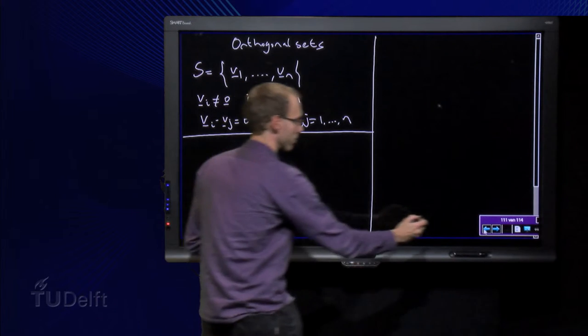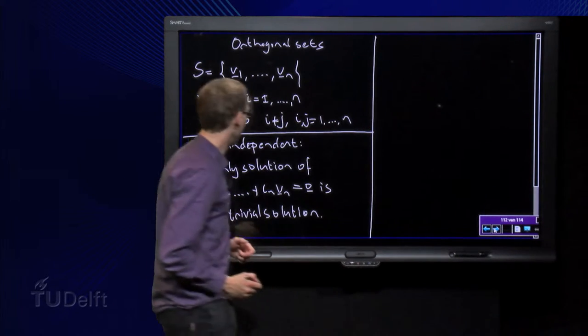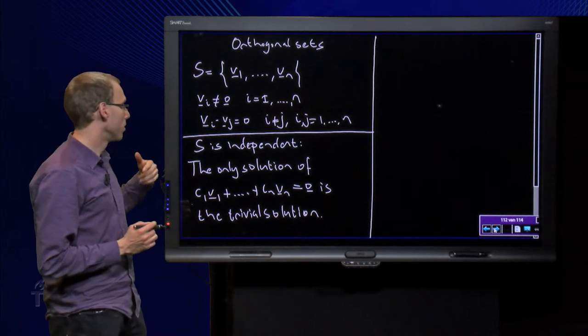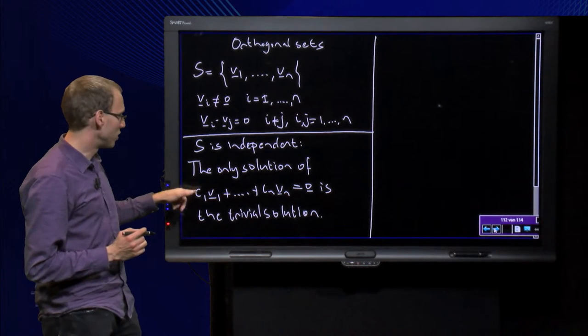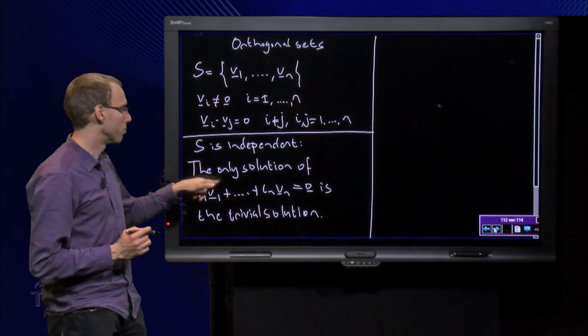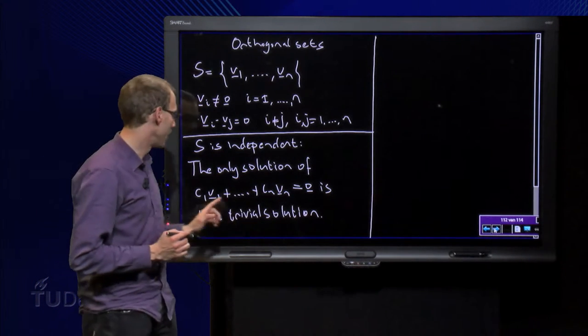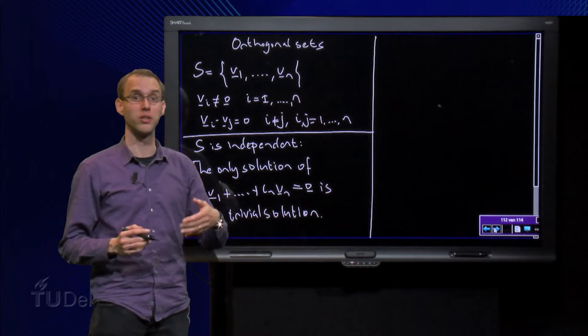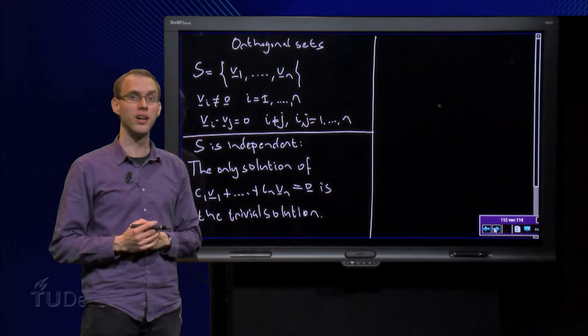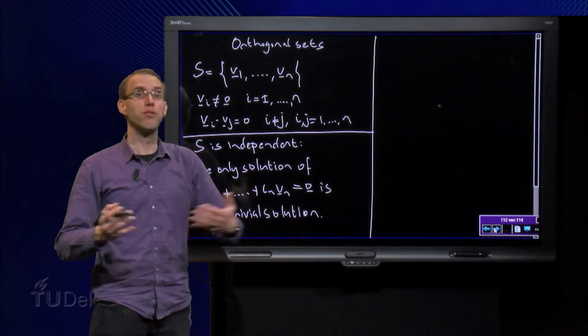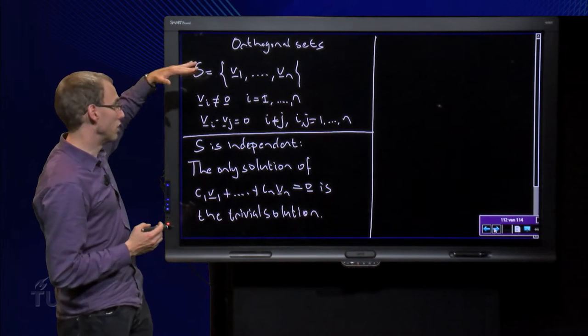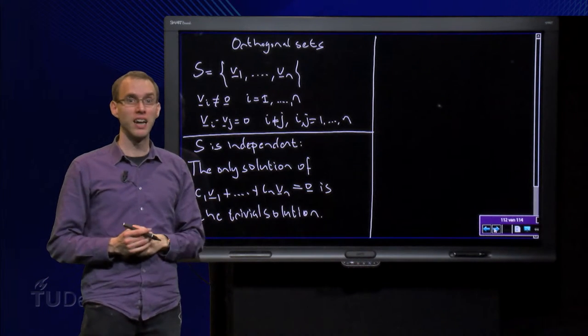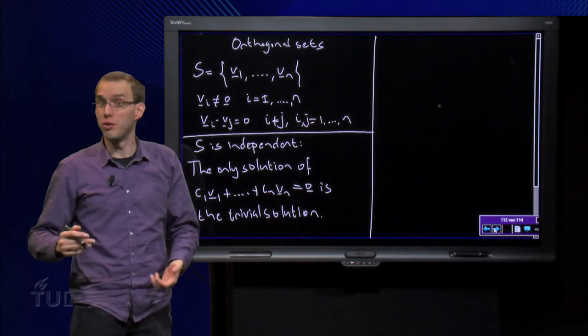And then, what we need to prove is that S is independent, so that the only solution of the equation C1V1 up to CnVn equals zero is the trivial solution C1 equals zero, C2 equals zero, C3 equals zero, until Cn equals zero. Mind, we haven't proved anything yet, we just put assumptions here, and we put here what we need to prove. And then the proof is actually only a few lines.